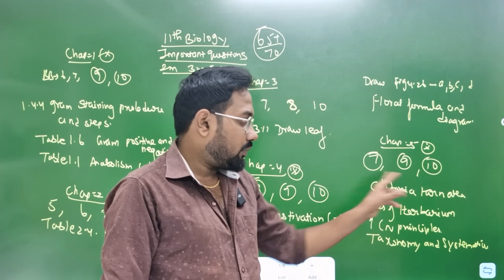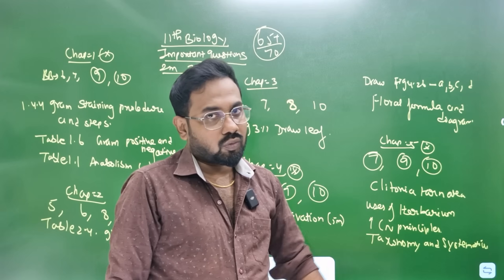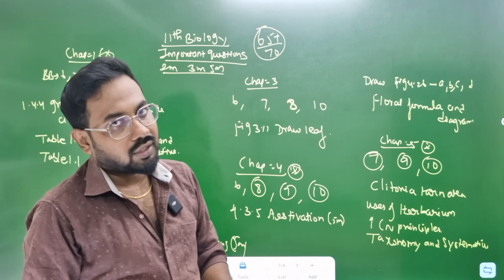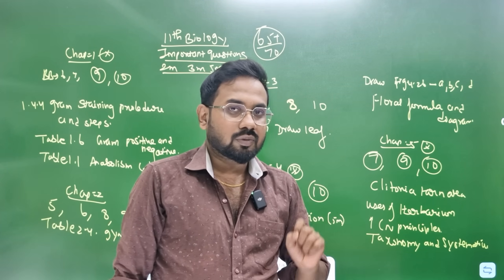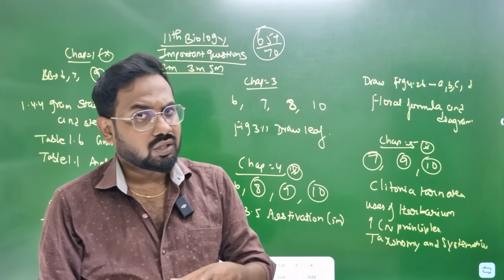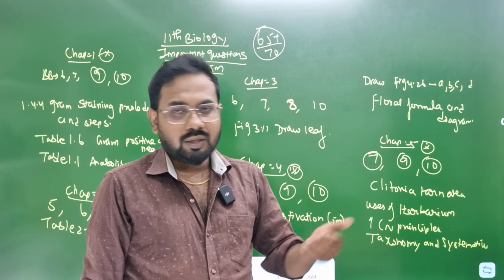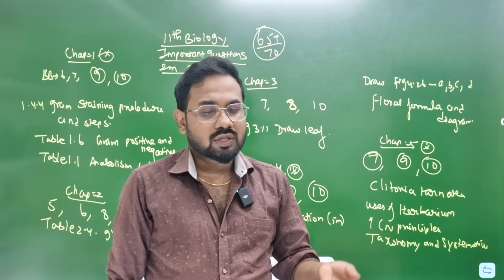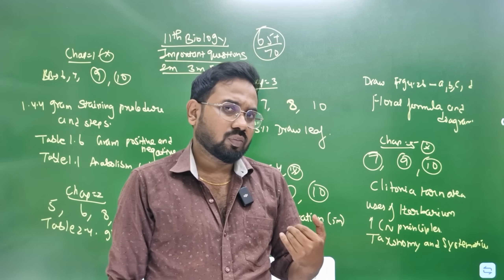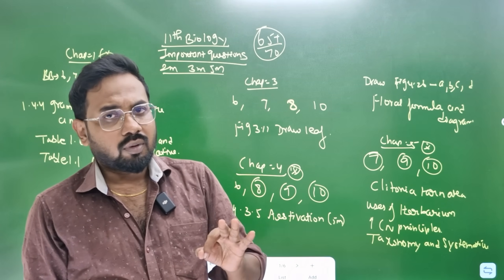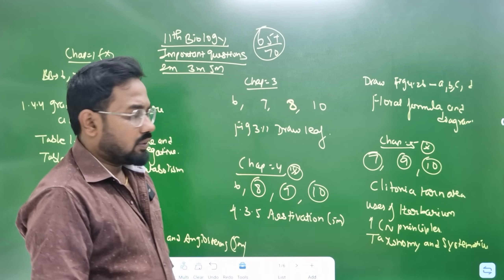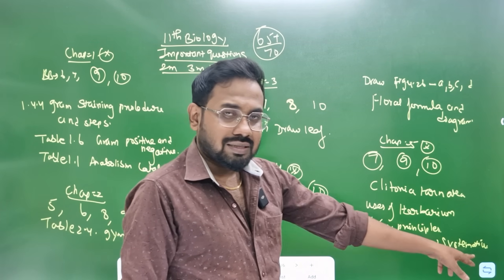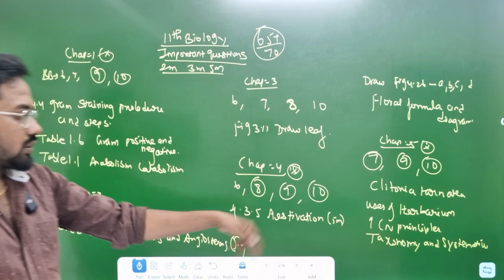Chapter 5 is very important. If you look at the seeds, inflorescence, flower, leaf, seeds, fruits, etc., you can learn sections 6.7. That is a floral form and a floral diagram — that is a must. Use as a Herbarium. ICN principle. Taxonomy systematic. First page is very important. This is 3.3 marks.